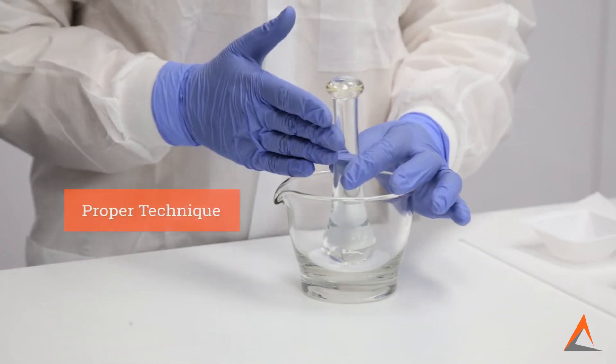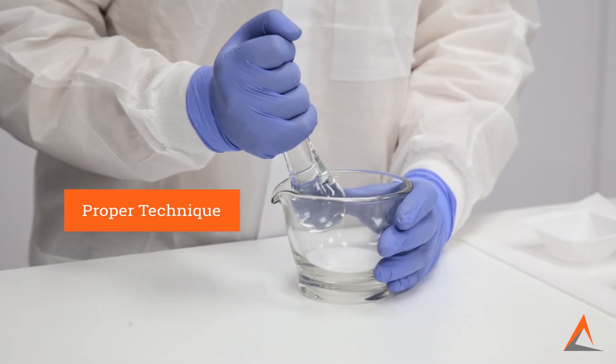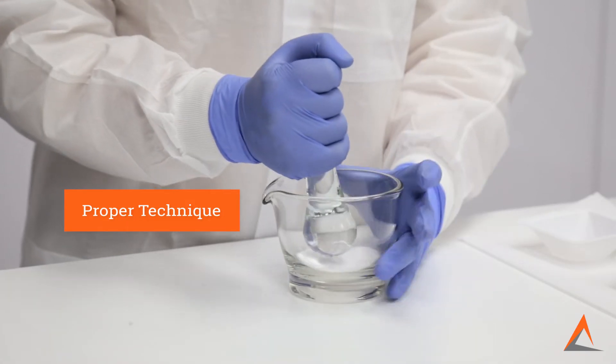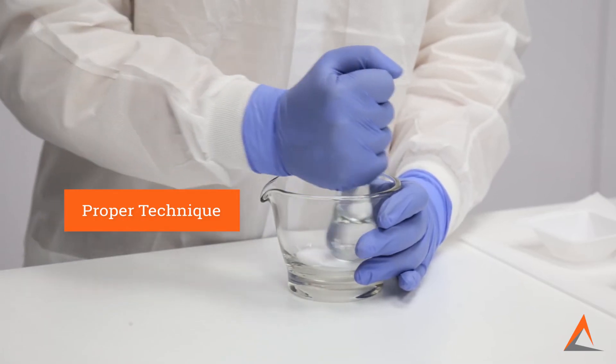Alternatively, to ensure that you are effectively triterating, you want to make sure you hold the pestle firmly in your hand and apply sufficient force against the sides and bottom of the mortar while stirring your powder. This will allow you to grind the powder between the mortar and pestle.